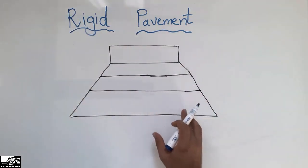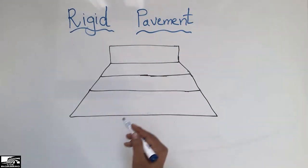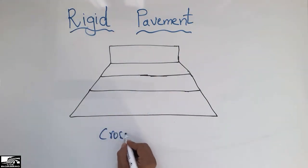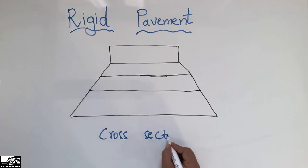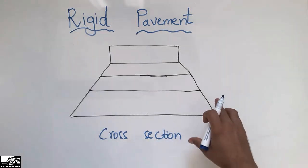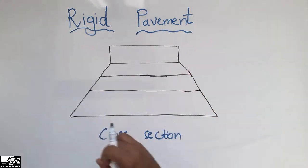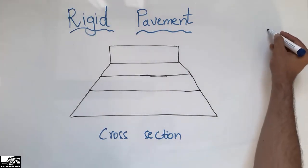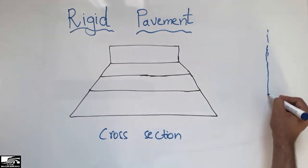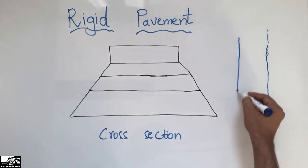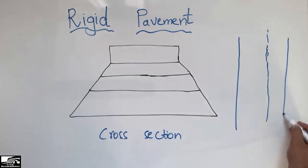I want you to know about the rigid pavement and its cross-section. This is the cross-section of the rigid pavement, and it is different from the flexible pavement. Let's consider that this is the road — this is one side of the road and this is the other side of the road.